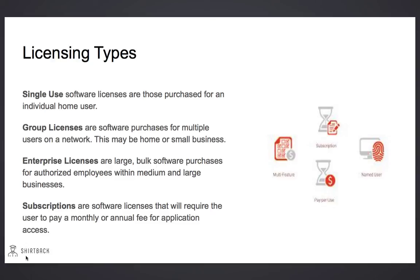There are several licensing types to be familiar with. Single-use software licenses are purchased for an individual home user. A group license is a software purchase for multiple users on a network — these are common for small businesses or multiple users at home. Enterprise licenses are large bulk software purchases for medium and large businesses. Subscriptions are software licenses that require the user to pay a monthly or annual fee.